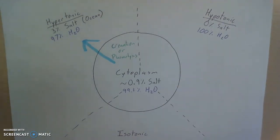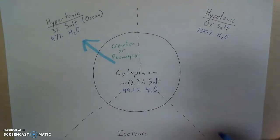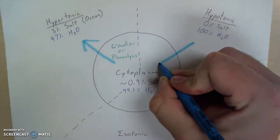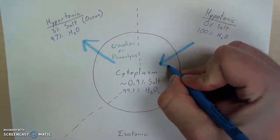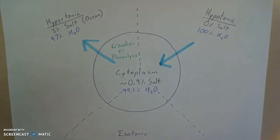So again, I like thinking about the concentration of water so that I can quite simply compare the cytoplasm and the environment here. 100% in the environment, 99% in the cytoplasm. Water will always move from where there is a higher concentration to where there is a lower concentration. So in this case, the water will move into the cell.